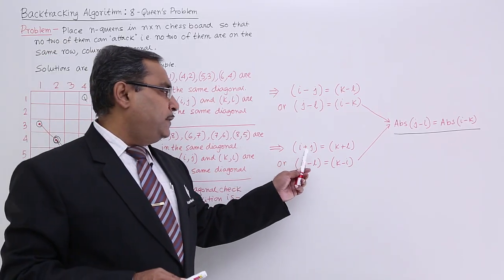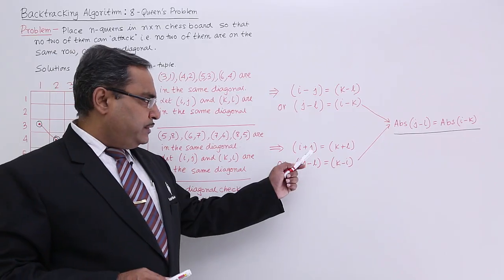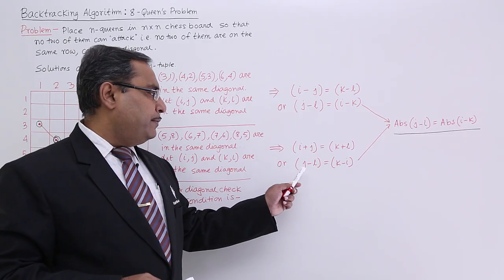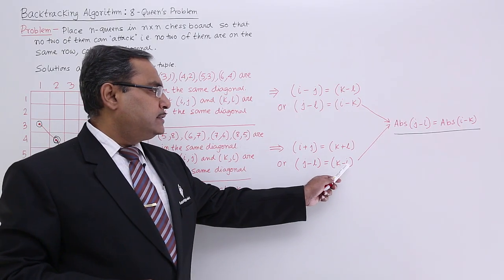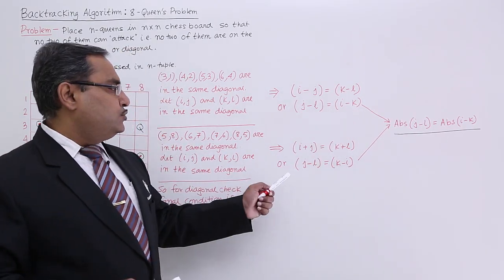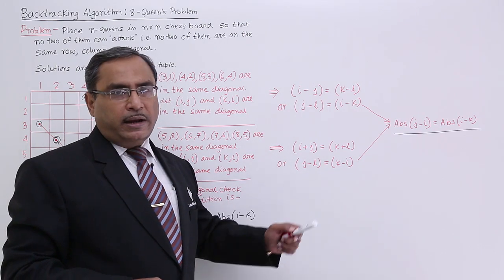I can write i plus j is equal to k plus l. So if we do some alterations here then I am getting j minus l and that is k minus i, here it was i minus k. So that is j minus l is equal to k minus i.